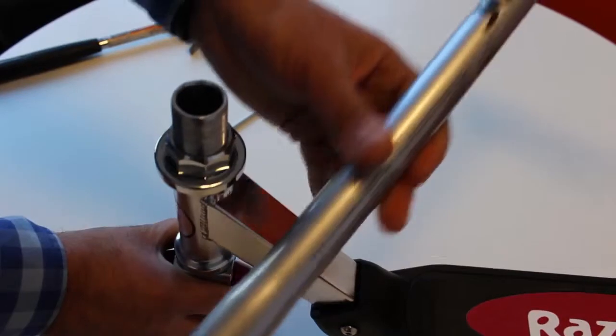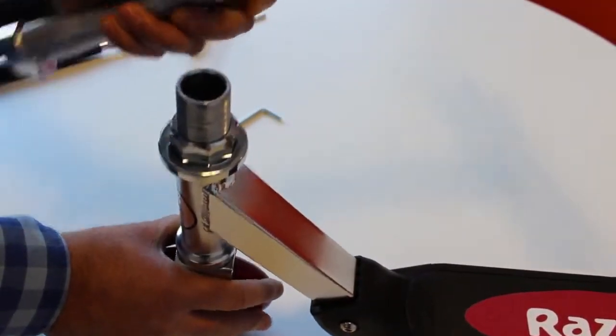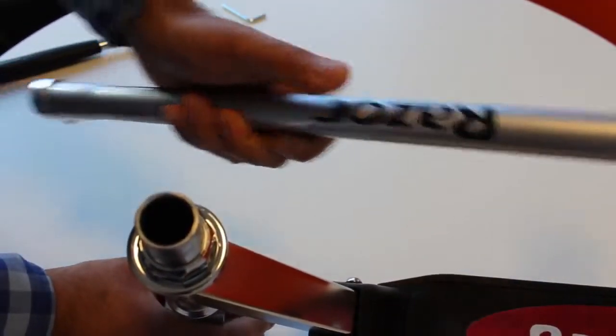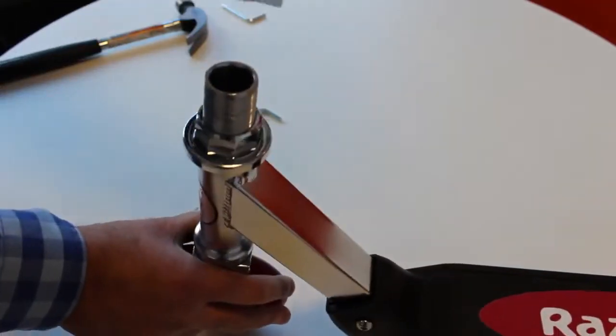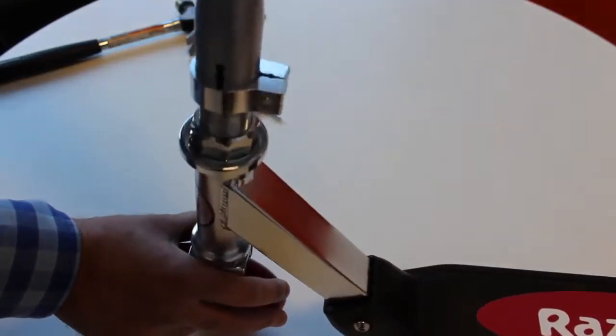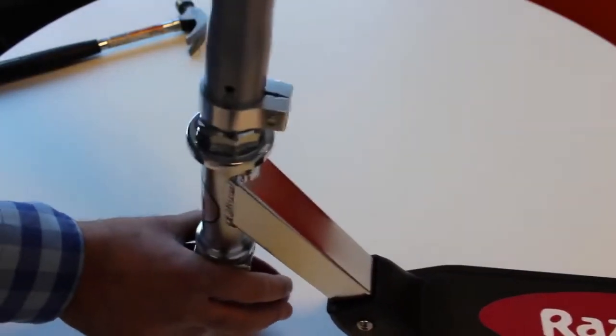Now you just need to place your handlebar onto the forks to complete the assembly. Again as described the Razor logo is front facing so that's the front of your handlebars. Slot it over the forks.